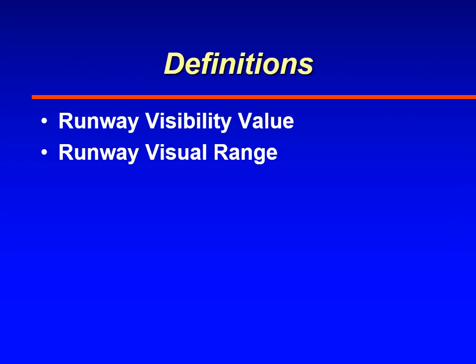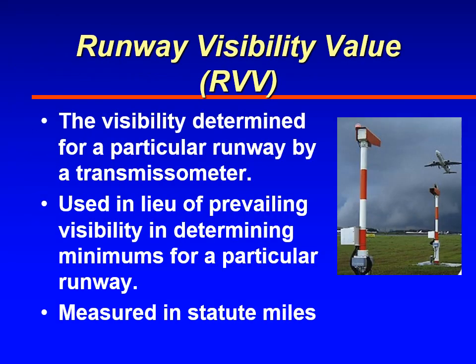There are two other definitions you need to be familiar with: runway visibility value (RVV) and runway visual range (RVR). The words look similar but they're two different things. Runway visibility value is measured by a transmissometer along the side of a runway near the landing zone. It estimates visibility based on the transmission of a light and how much light gets scattered as it travels through the atmosphere. The transmitter and receiver are typically about 250 meters or feet apart, and measuring the scattering of light determines the visibility — usually measured in statute miles.